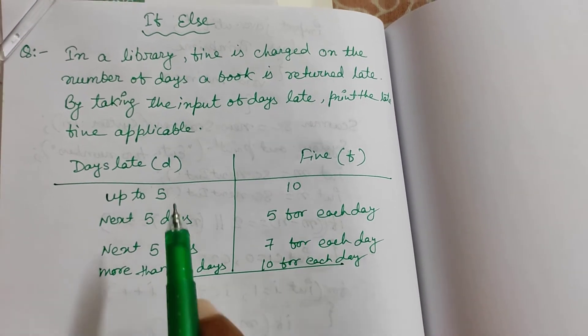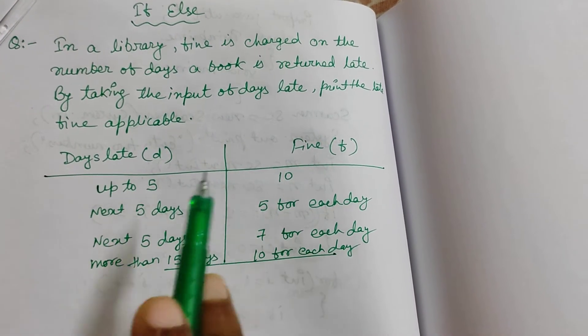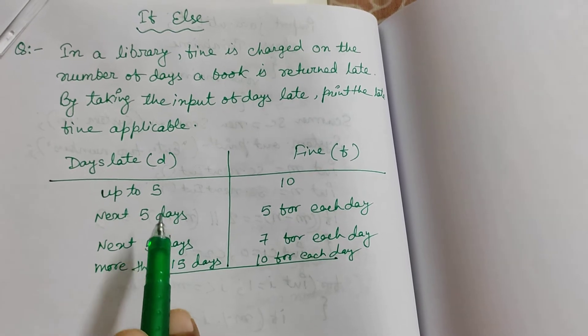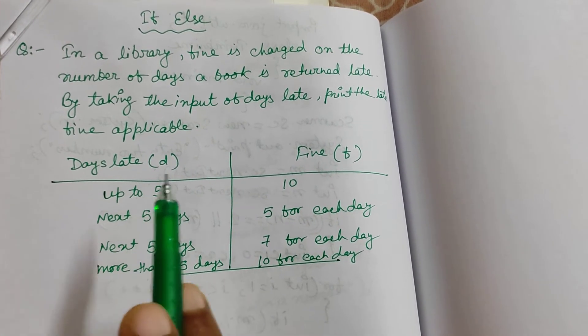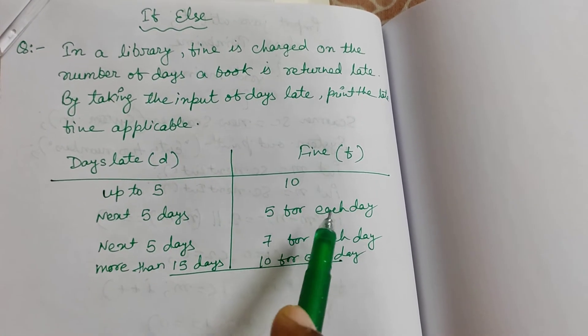So these are the applicable fines: first 5 days, up to 5 days, 10 rupees. Next 5 days, that is 6th day to 10th day, 5 rupees each day.